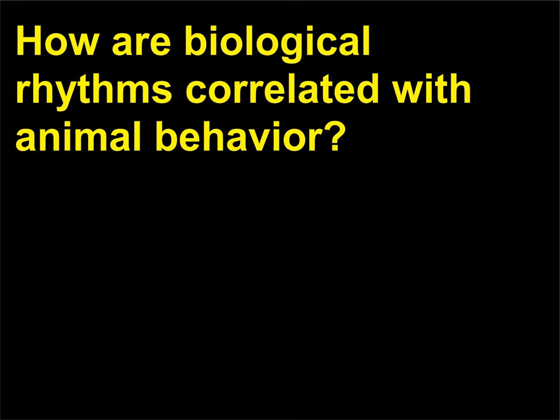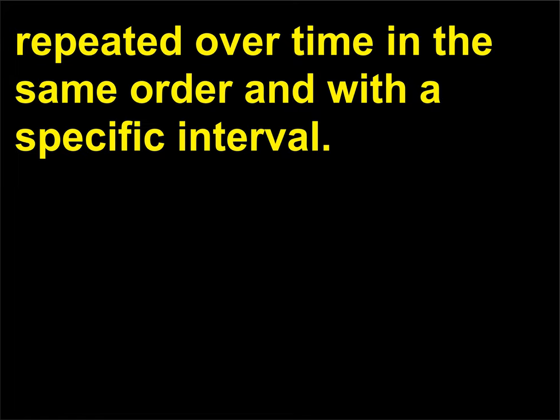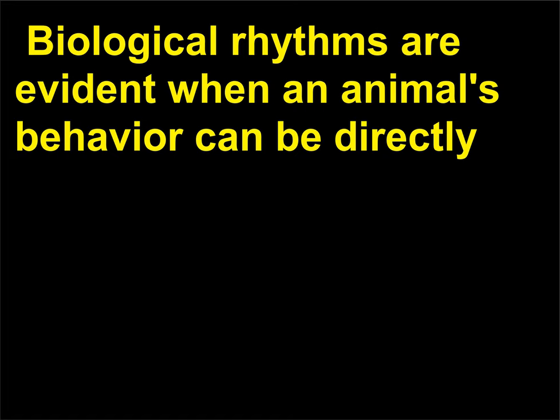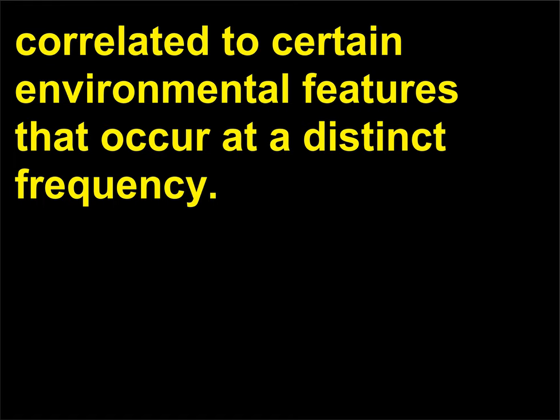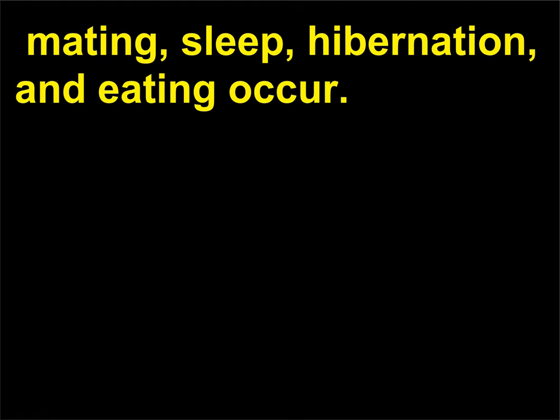How are biological rhythms correlated with animal behavior? A biological rhythm is a biological event or function that is repeated over time in the same order and with a specific interval. Biological rhythms are evident when an animal's behavior can be directly correlated to certain environmental features that occur at a distinct frequency. Biological clocks control animal behaviors such as when migration, mating, sleep, hibernation, and eating occur.